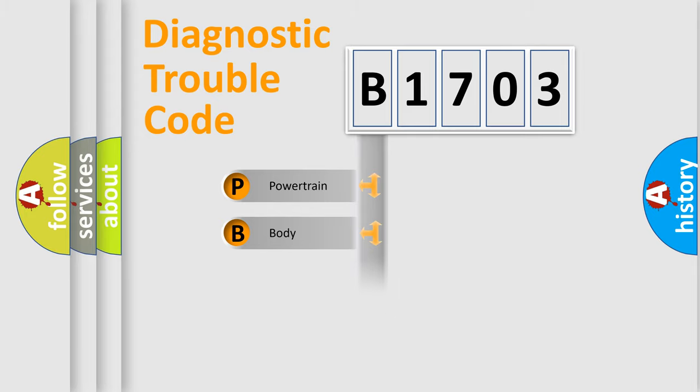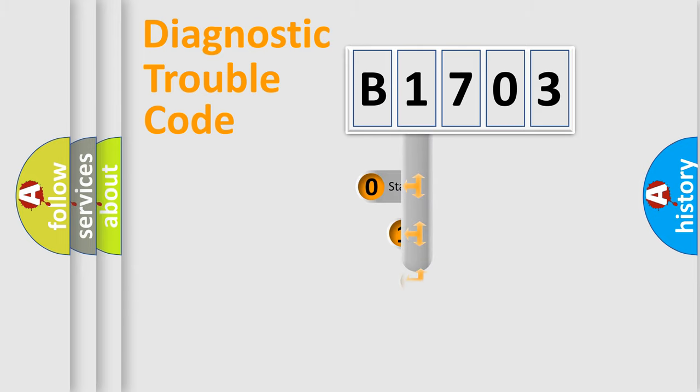Powertrain, Body, Chassis, and Network. This distribution is defined in the first character code.